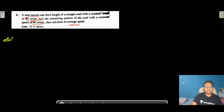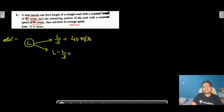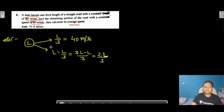Let total distance be L. One-third of L, that is L/3, is covered at 40 m/s. The remaining portion is L − L/3 = (3L − L)/3 = 2L/3, covered at 60 m/s. We will calculate average speed the same way as before, using total distance upon total time.